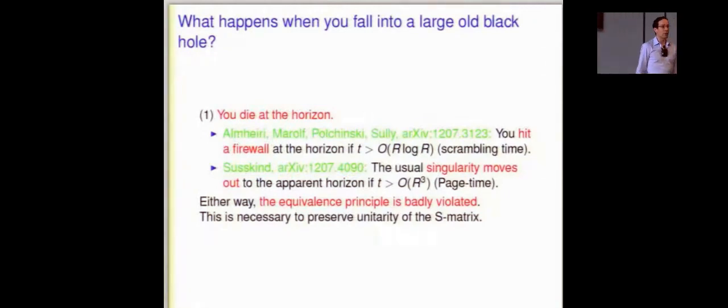What happens when you fall into a large old black hole? I'm going to make the black hole large just so that the horizon scale is very large compared to the observer who falls in so that we can apply the equivalence principle. Things should be like flat space at the horizon. And the reason that it has to be old is a technical reason to which I'll come back but it really doesn't diminish the importance of the question.